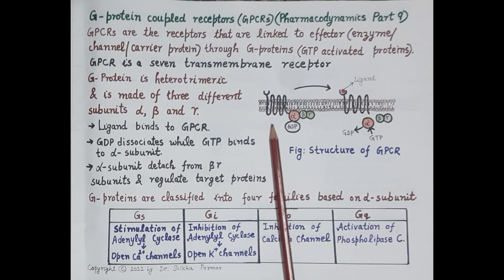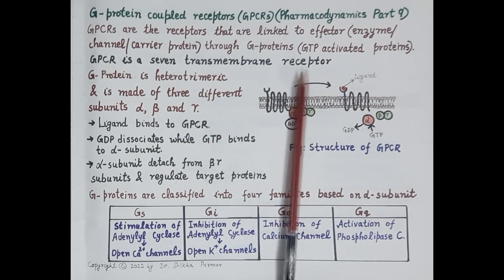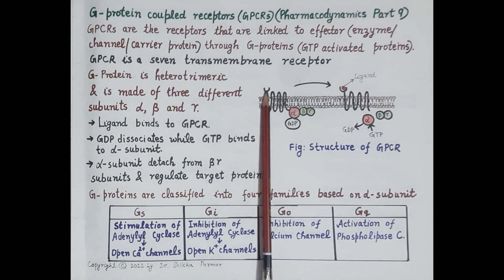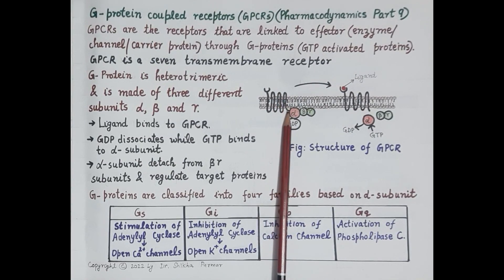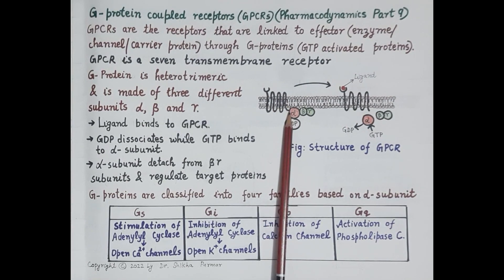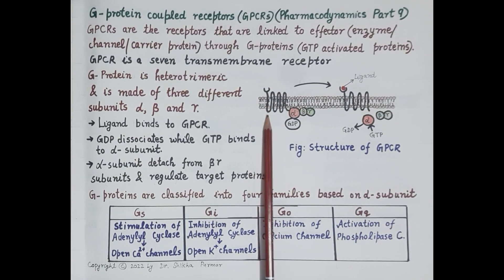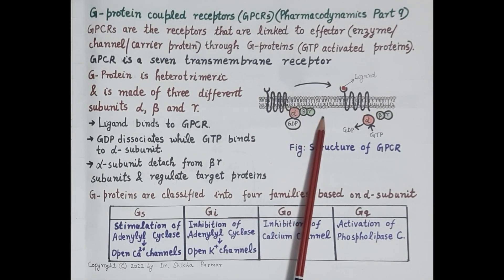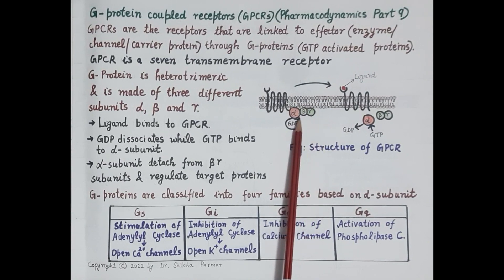A G protein coupled receptor is a seven transmembrane receptor, as it passes through the cell membrane seven times. It has two binding sites: one where the ligand or signal binds, and one on the intracellular surface where the G protein binds.